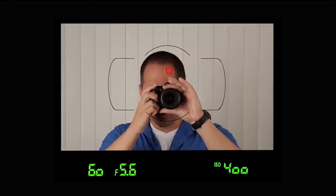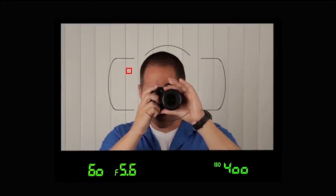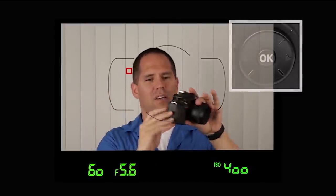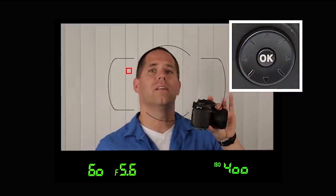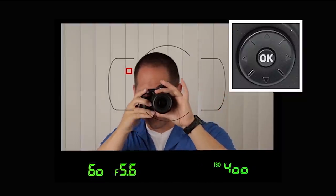For the most part I would say the majority of photographers are going to be using the single square most of the time. Now another little tip I can give you about the single focus square type is that if you move your square to the far left or the far right and it's way over here and you want to jump back to the center, just push the OK button and it will jump right back to that center point.